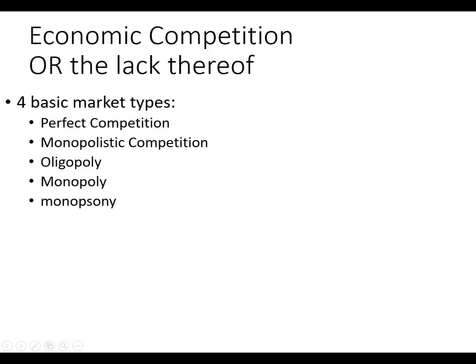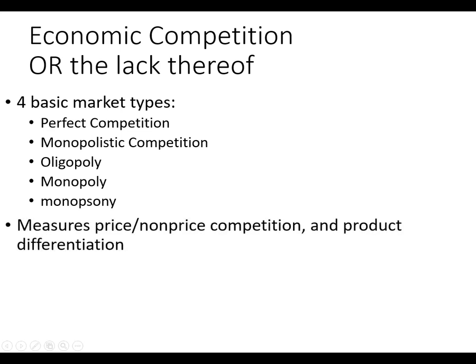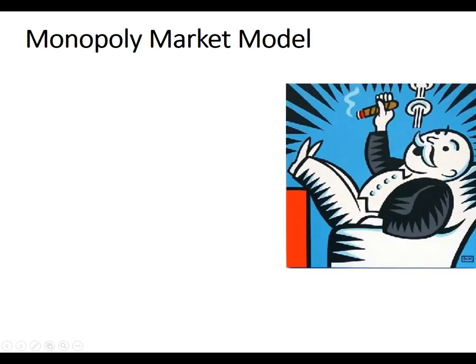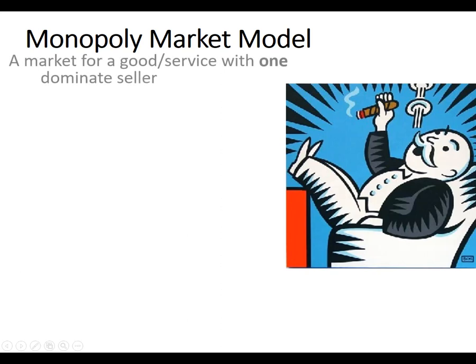I've got four here — really five market structures we're learning about — but monopoly and monopsony are very similar so we can put them together. We've learned about perfect competition; next module we'll learn about the others. What we're really measuring is: is there price competition? Is there non-price competition? Is there product differentiation? Monopoly tends to be the simplest because there isn't much competition — it's a market where there's one dominant seller.